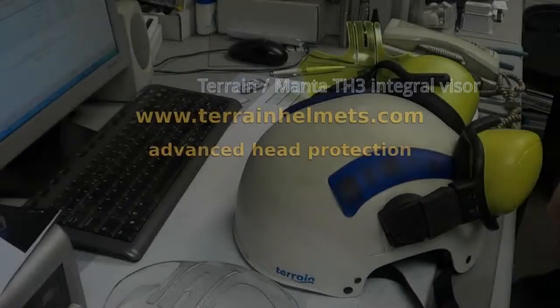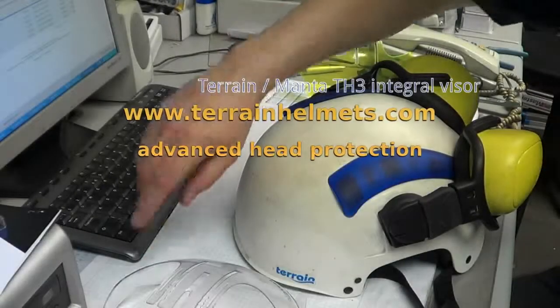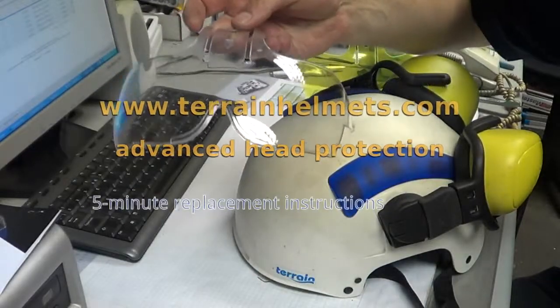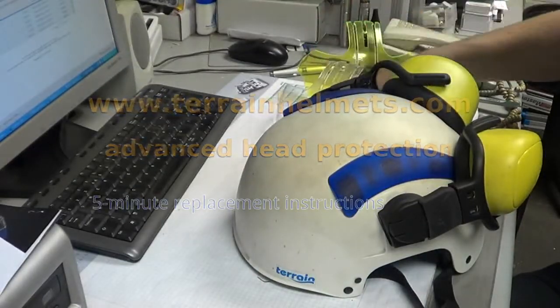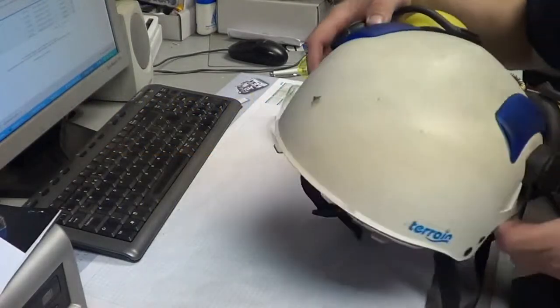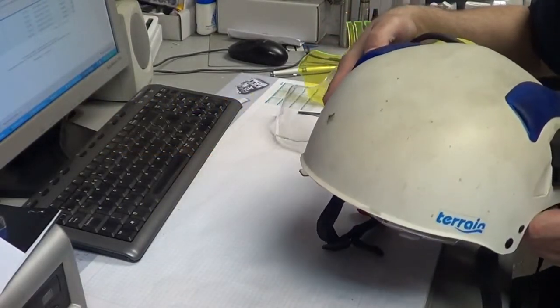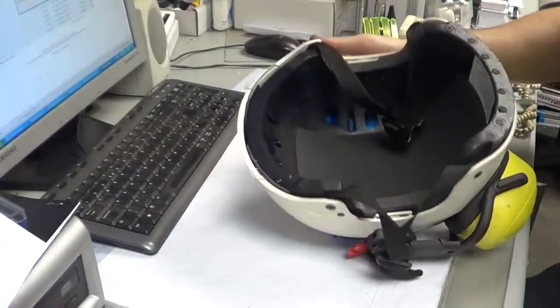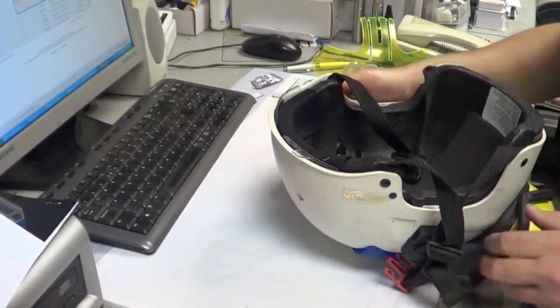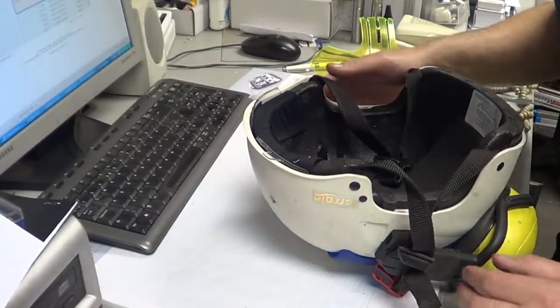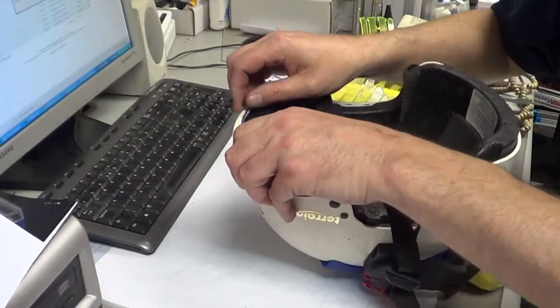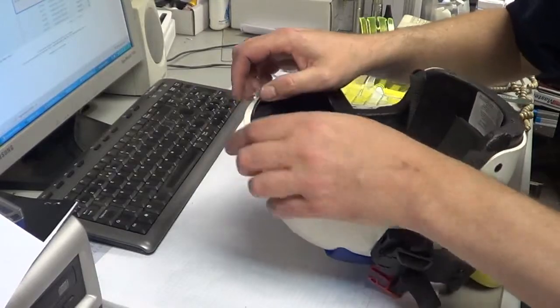In this short video today I'm going to demonstrate how you swap the integral visor in the terrain or manta helmet when it needs replacing because they do scratch. They're made of polycarbonate which, although it's incredibly tough, it's not really very scratch resistant, so they do need to be replaced from time to time.